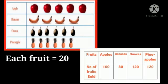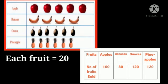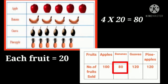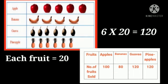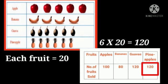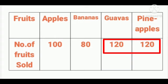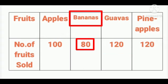Each fruit picture represents 20 fruits. Apples sold: 5 × 20 = 100 apples. Bananas sold: 4 × 20 = 80 bananas. Guavas sold: 6 × 20 = 120 guavas. Pineapples sold: 6 × 20 = 120 pineapples. From this pictograph we can conclude that guavas and pineapples are sold in the same number, and the fruit sold the least is bananas.